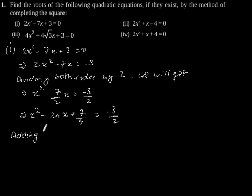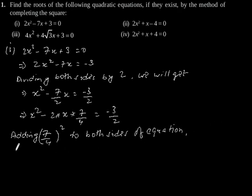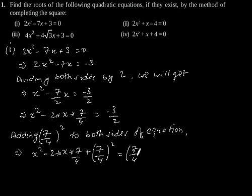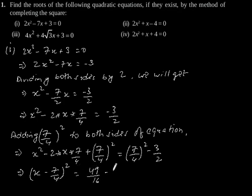Now, adding (7 by 4) squared to both sides of the equation, we get x squared minus 2 times x times 7 by 4 plus (7 by 4) squared is equal to (7 by 4) squared minus 3 by 2. This implies x minus 7 by 4, whole squared, is equal to 49 by 16 minus 3 by 2.